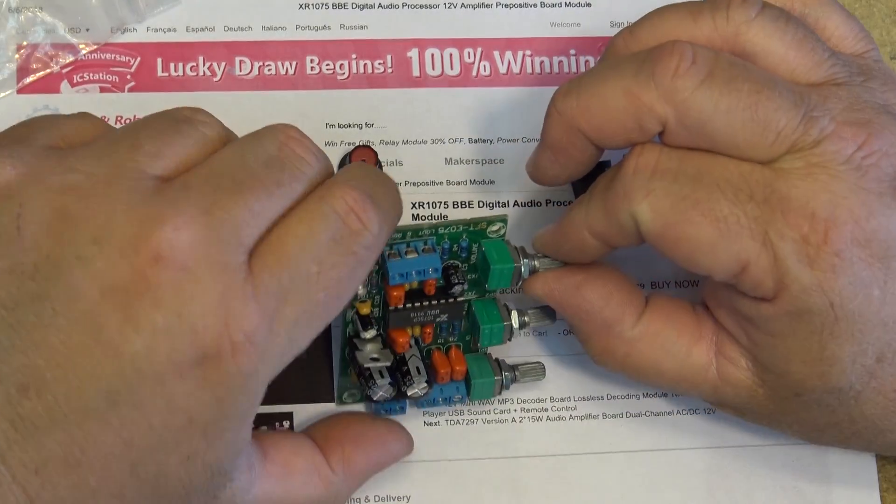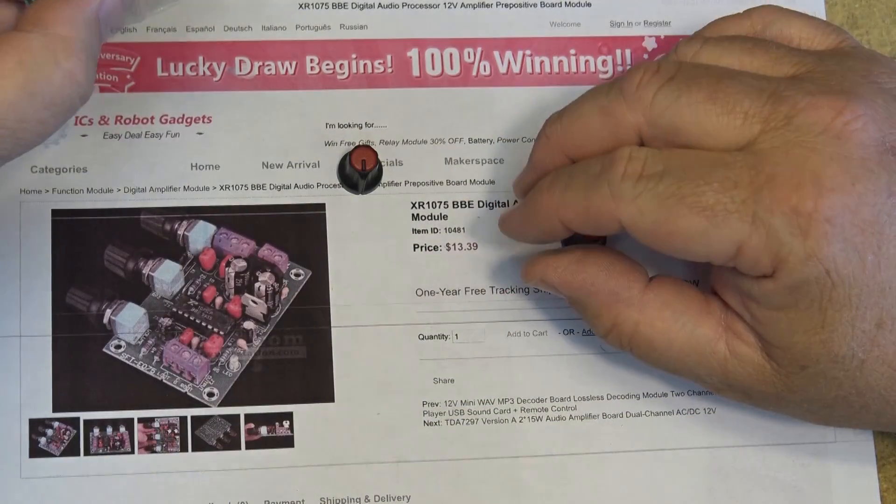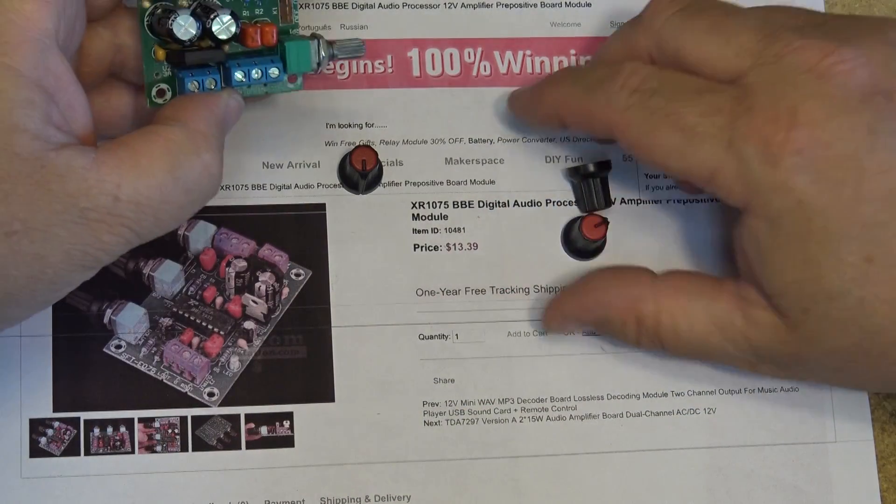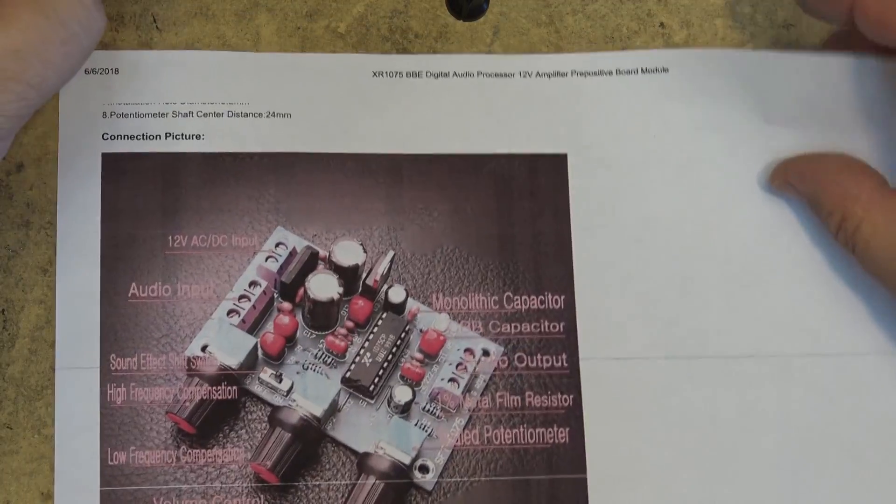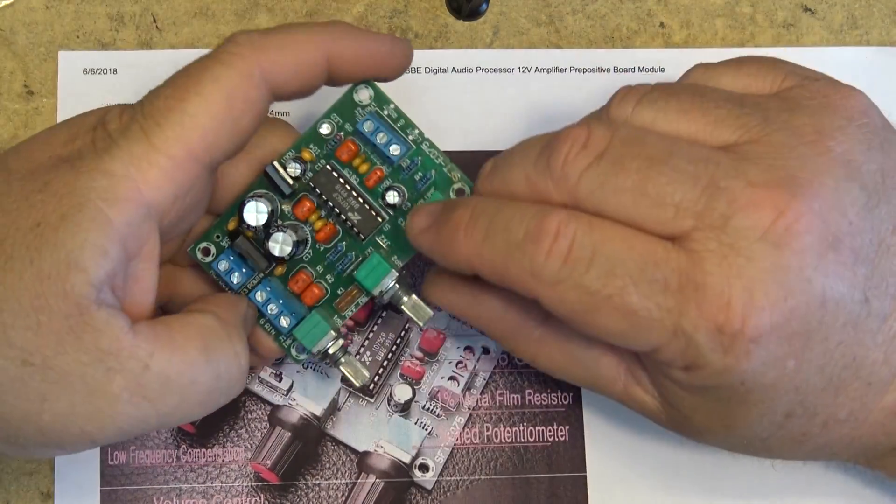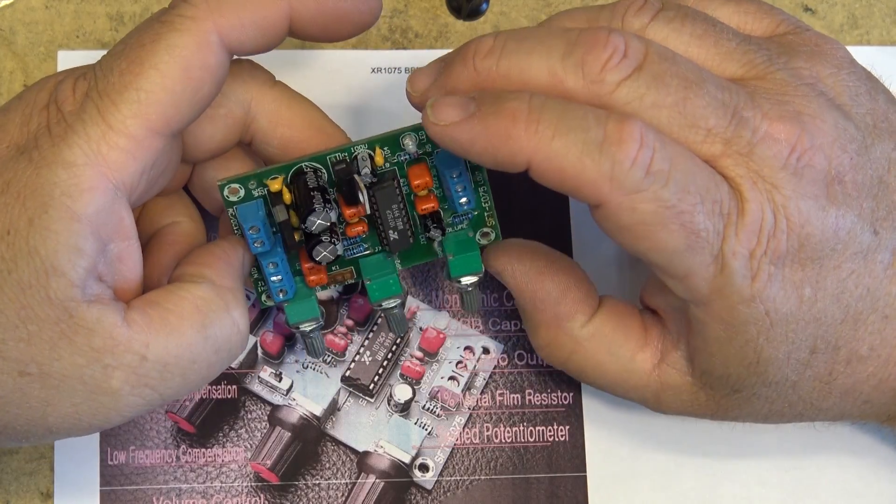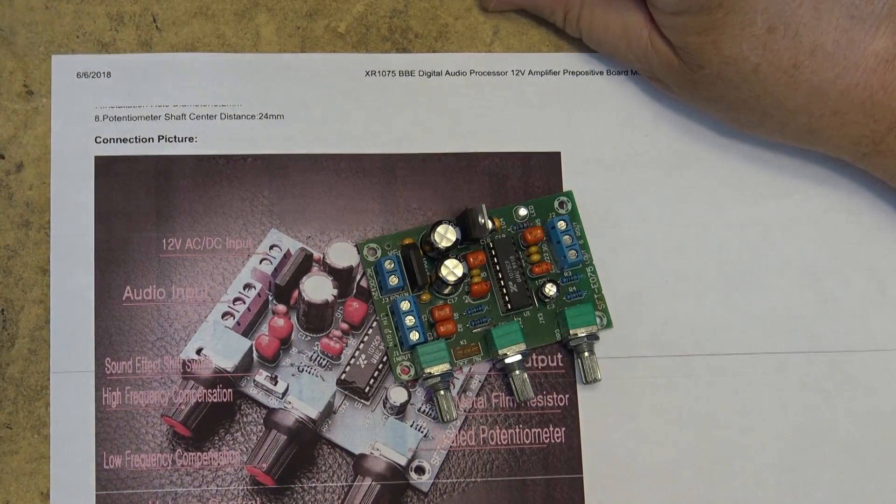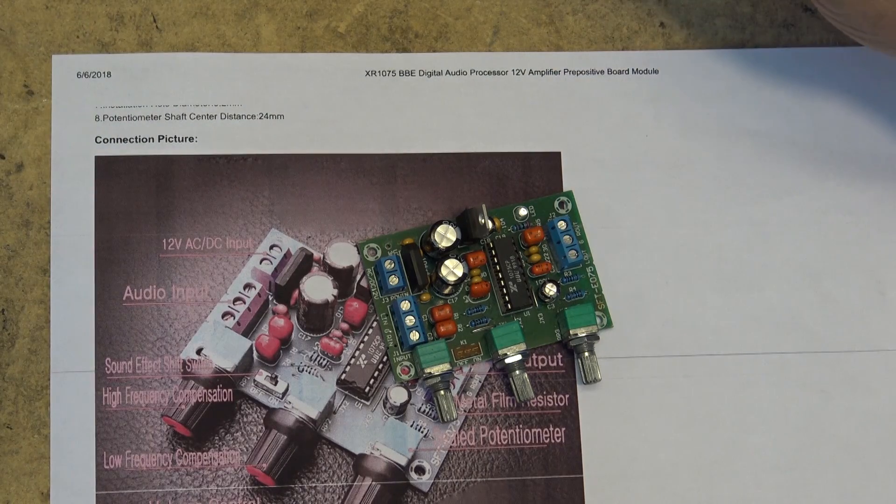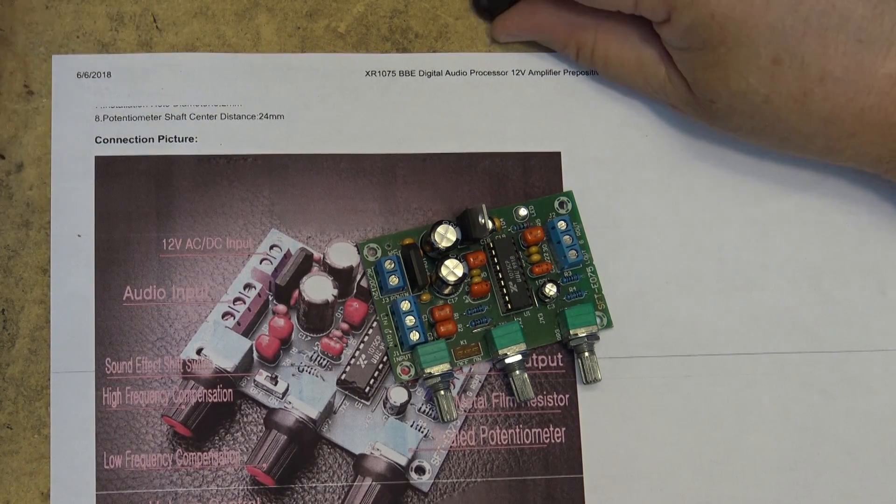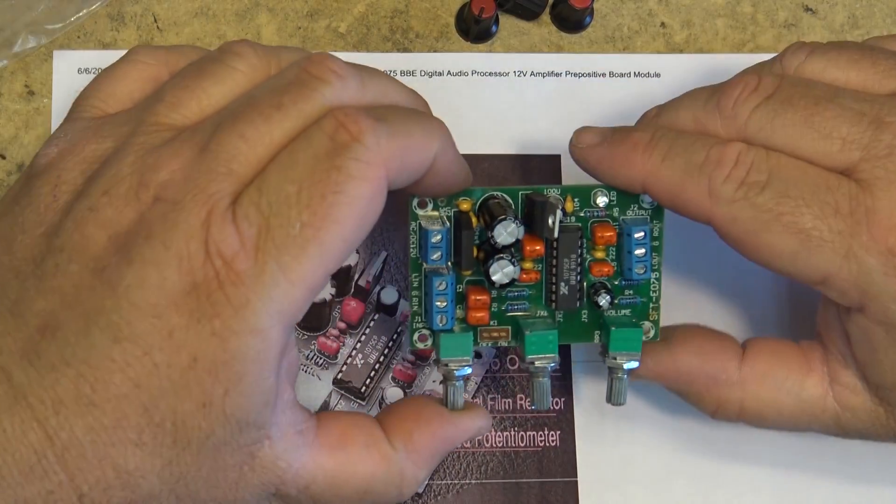Interesting. It looks like the switch is missing. It shows a little switch here, a sound effect switch. In my sample that switch is broken and I don't see any parts to it here. I don't see any pieces that have fallen off of it. Interesting. Well, I can still demo this thing.